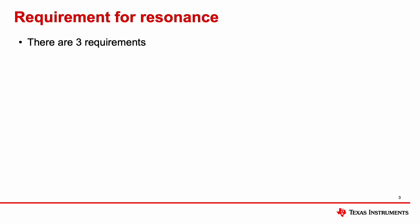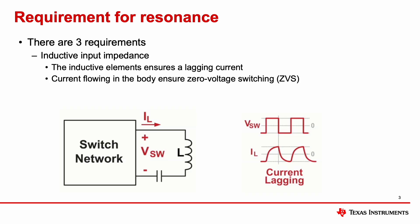There are three requirements for resonance. One of them is to have an inductive input impedance. The inductive elements ensure a lagging current, which can help ensure current flows through the body diode of the switching element to help achieve ZVS, or zero voltage switching.